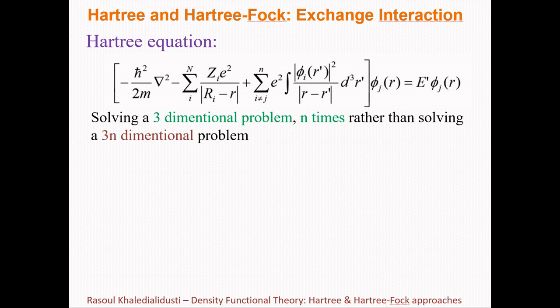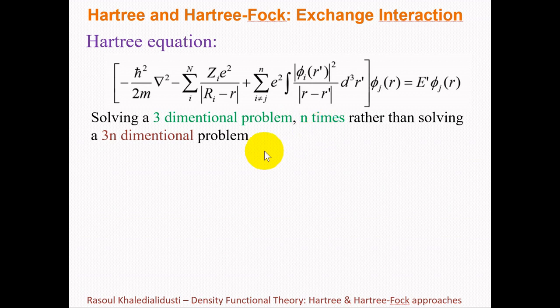We already understood that the Hartree equation leads to solving a three-dimensional problem N times, instead of solving one 3N-dimensional problem in the Born-Oppenheimer Schrödinger equation, which is impossible to solve computationally. So by having a Hartree equation we can solve three-dimensional problems N times instead of solving one 3N-dimensional problem.